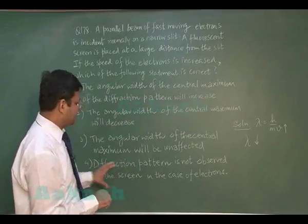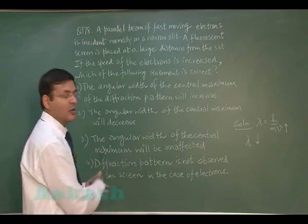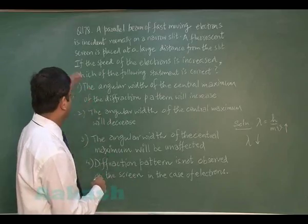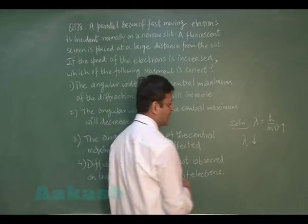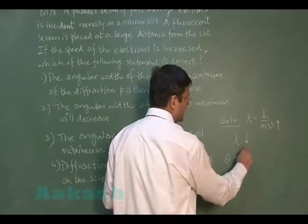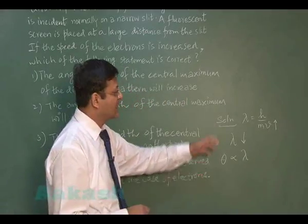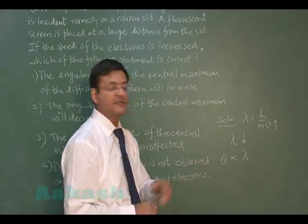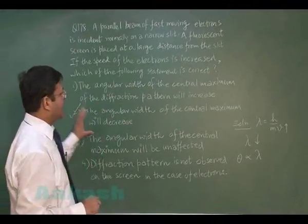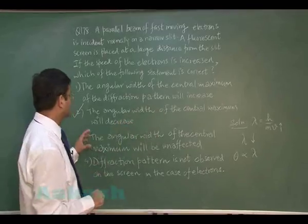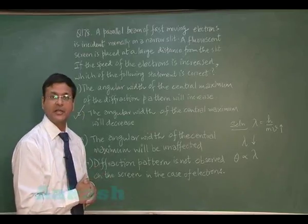The fourth option, that the diffraction pattern is not observed, is absolutely wrong. The angular width of the central maximum is directly proportional to λ, i.e., θ ∝ λ/aperture. Since λ is decreasing, θ also decreases. So the second option — that the angular width of the central maximum will decrease — is the most appropriate answer for question 178.